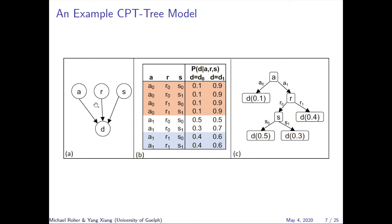Here we have an example of a Bayesian network family in panel A, with its CPT shown in panel B and a CPT tree encoding the same CPT in panel C. The CPT tree is directed from the root downwards to its leaves. Each non-leaf, such as node A, is a variable in the parent set. Each path from the root to a leaf is a context of assigned values to some parents — for instance, A equals A1 and R equals R1 is a context. Each leaf specifies a conditional probability distribution given the context. The CPT tree encodes the fact that in some contexts certain variables are independent of others, reducing the number of parents needed to specify the CPT. For instance, when A equals A0, we do not consult R and S, since all CPDs with that context share a duplicate CPD of 0.1 and 0.9.